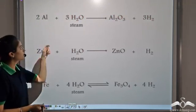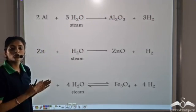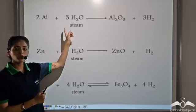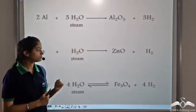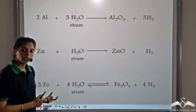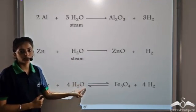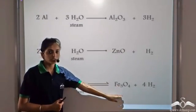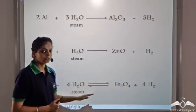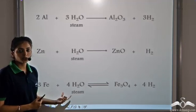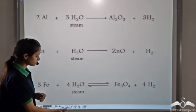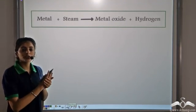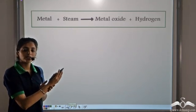Similarly, other metals like Aluminium cannot react with cold water — they react only with steam to form the corresponding oxides. Aluminium forms Aluminium oxide and Hydrogen. Zinc forms Zinc oxide and Hydrogen. In the case of Iron, the reaction is reversible: Iron reacts with steam to form Iron oxide plus Hydrogen, and this reaction is reversible. So these metals cannot react with water; they react with steam to form the corresponding oxides and release Hydrogen gas.